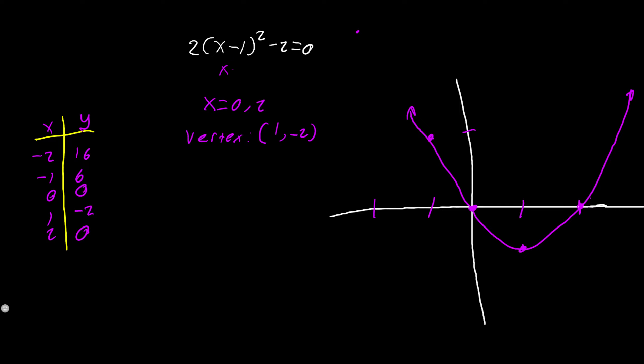The parabola has a vertex at (1, -2), since we can read that directly from the equation. We set the value inside the parentheses equal to 0, giving us x = 1, which is the x-coordinate of our vertex. The k value, negative 2, is the y-coordinate of our vertex. So since x - 1 = 0 gives x = 1, and it's shifted down 2 units, our vertex is at (1, -2).